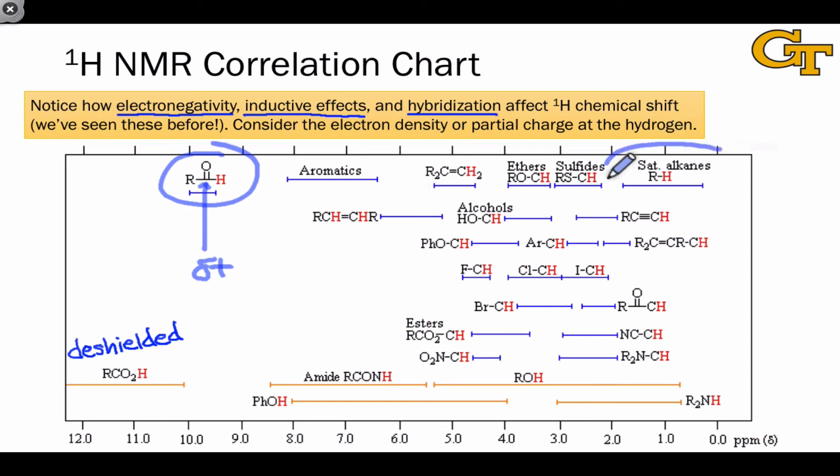On the other hand, it makes sense that saturated alkanes should be some of the most upfield or shielded protons since carbon is not very electronegative relative to, for example, oxygen or nitrogen, where we find those protons at higher chemical shift—more deshielded or more downfield. These are three ways of saying the same thing.